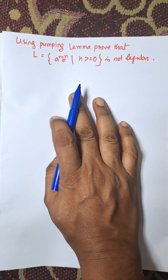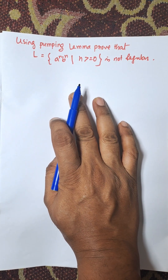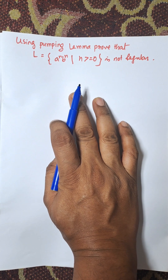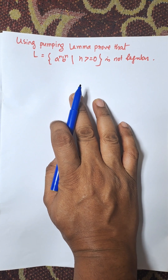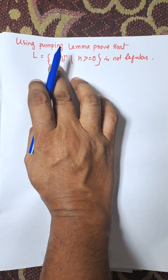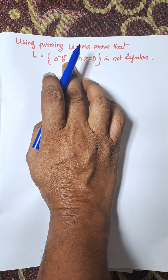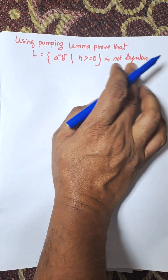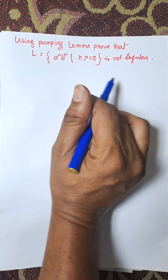Everybody, in this video I am going to discuss pumping lemma in automata theory. Using pumping lemma, prove that L equal to a to the power n, b to the power n, c to the power n is not regular.